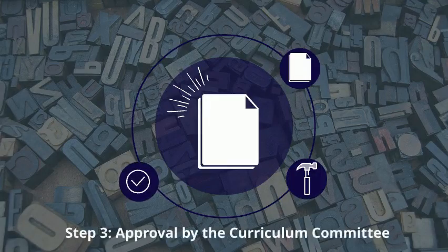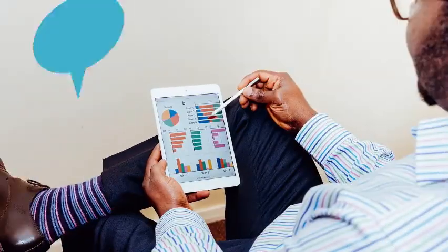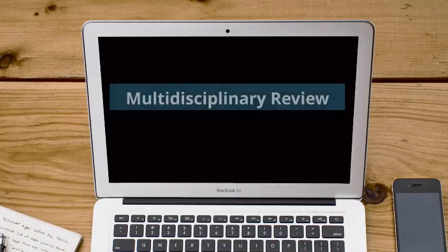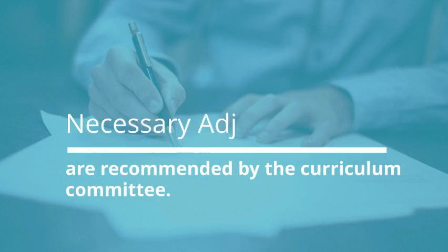The third step is approval by the curriculum committee. The curriculum committee will review the associated content once it has been completed and approved for submission, using a peer-reviewed questionnaire. This review process will take a multidisciplinary look at the content and ensure the curriculum is fully aligned and meets CityU as well as other relevant accreditation standards. If there are necessary adjustments, those will be recommended during curriculum committee review toward final approval.